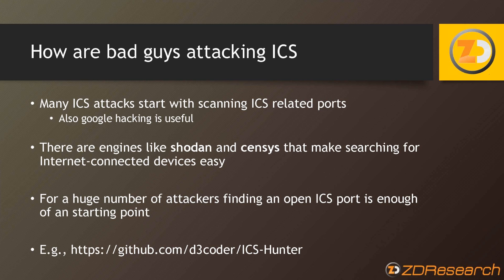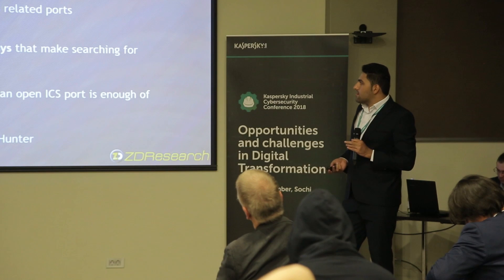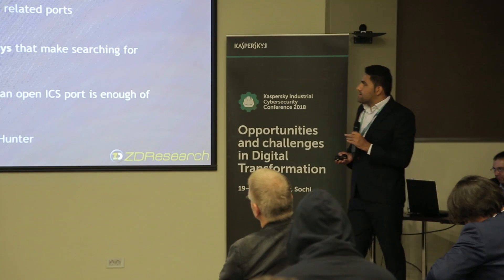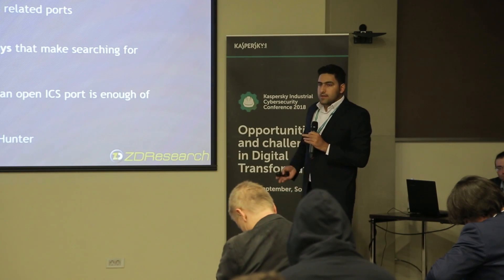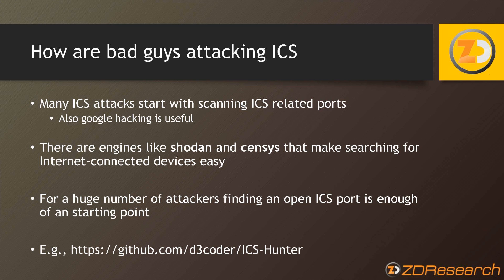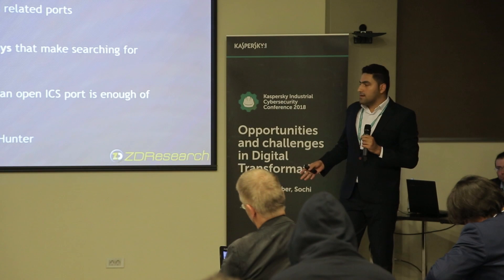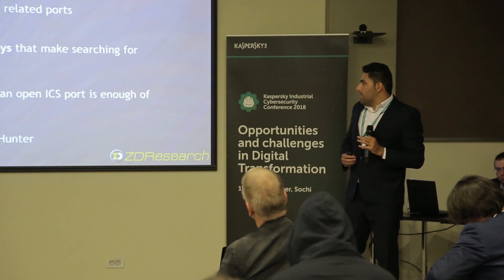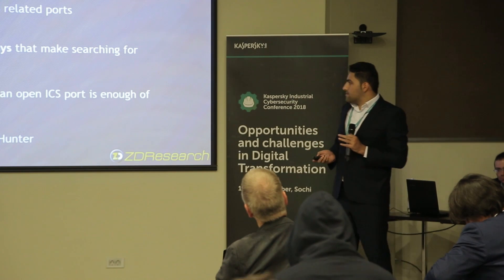In recent years we have seen malware attacks against ICS devices, but remote network attacks are still popular. These attacks can be active or passive. For active attacks, attackers scan IP ranges and filter ICS-related ports using tools such as Nmap or Masscan. For passive scanning, they can use Google hacking or visit websites like Shodan. After finding such systems, they try attacks such as brute force, denial of service, sending spoofed packets, or using custom exploits.